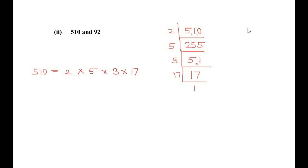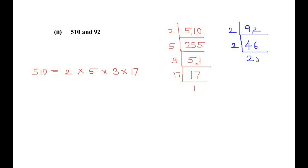Now let us find the factors of 92. This number ends with an even number so it is divisible by 2. Dividing repeatedly by 2 gives us 2 times 2 times 23, and 23 is a prime number so it divides itself. So the factors of 92 are 2 times 2 times 23.